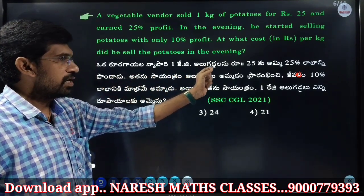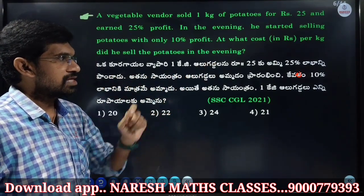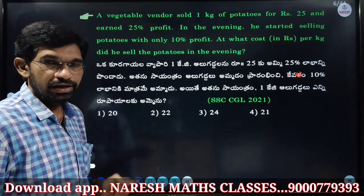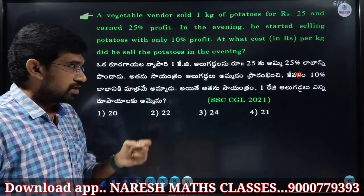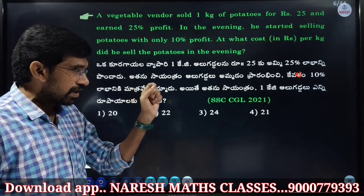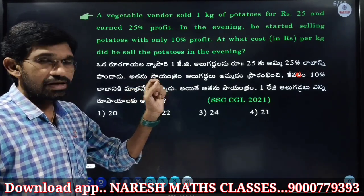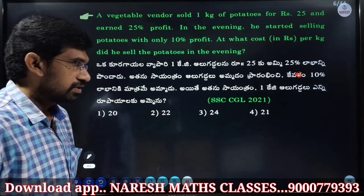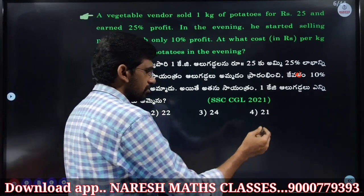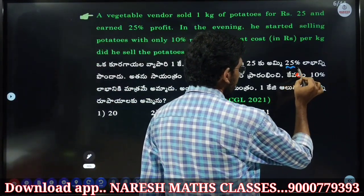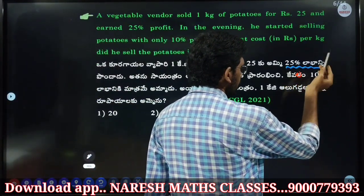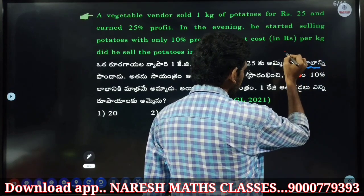One case for 25 rupees. The selling price is 25 rupees. Profit is 25 percent. In the evening, the profit is different.